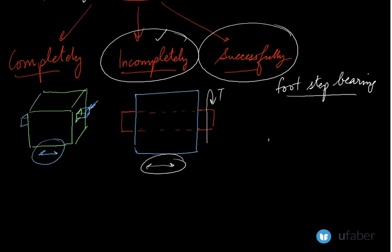Now what is a footstep bearing? You have a journal. This is your journal. In this bearing, you have a vertical shaft which fits on top of this hemispherical journal.